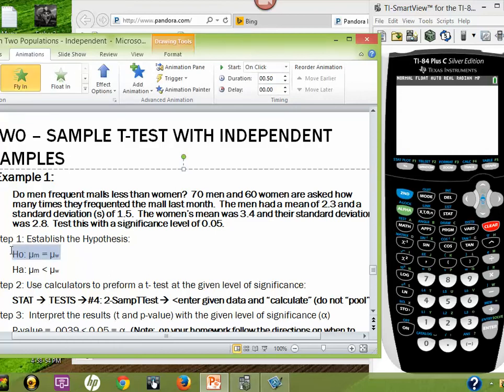Alright, so again, with our null hypothesis, we are assuming that there's no difference that men and women frequent the malls, on average, the same time, same average number of times per month. And then, the alternative is, here's our question. Do men frequent malls less than women? So, we would say men, the average number of times is less than the average number of times for women.